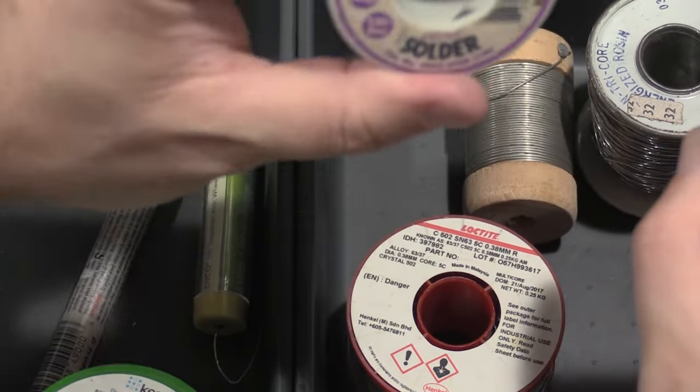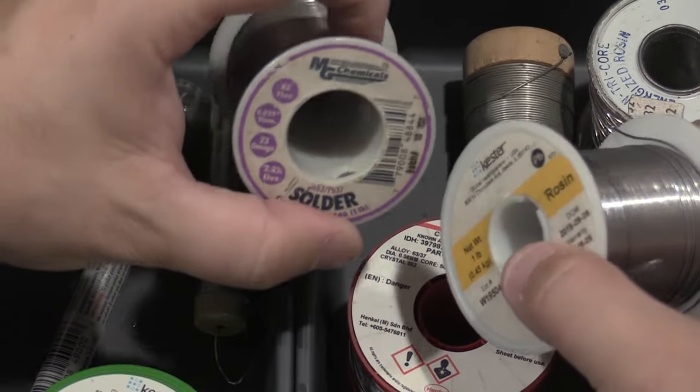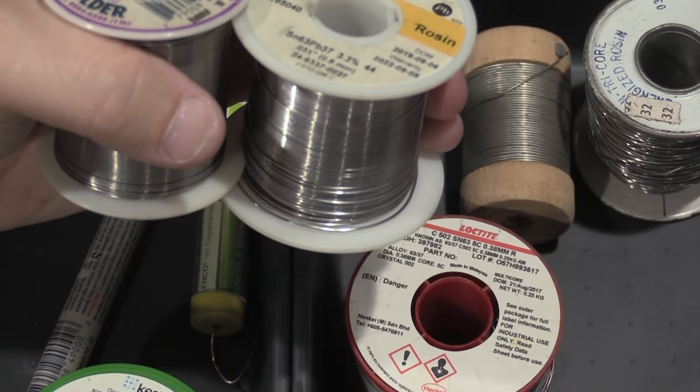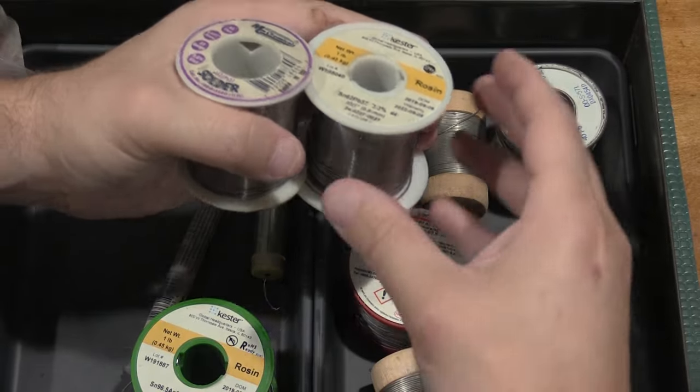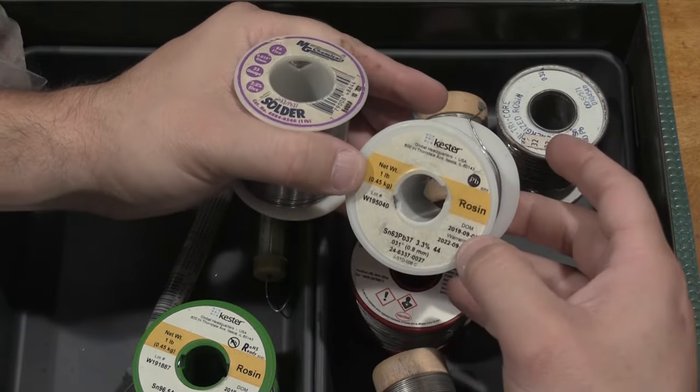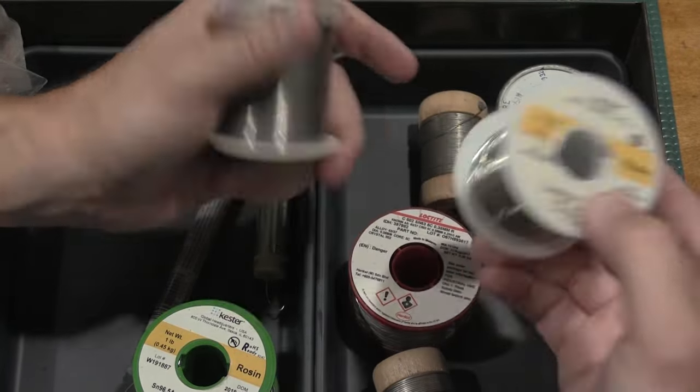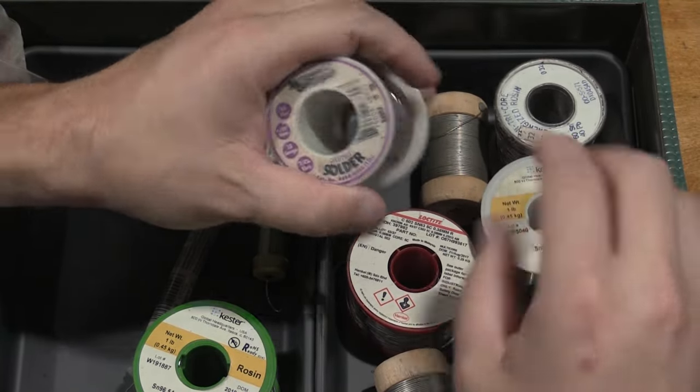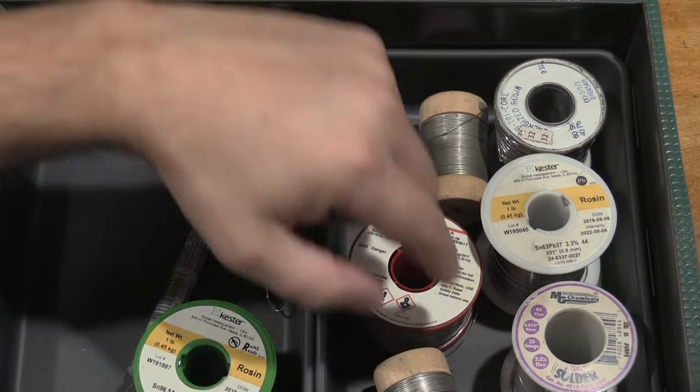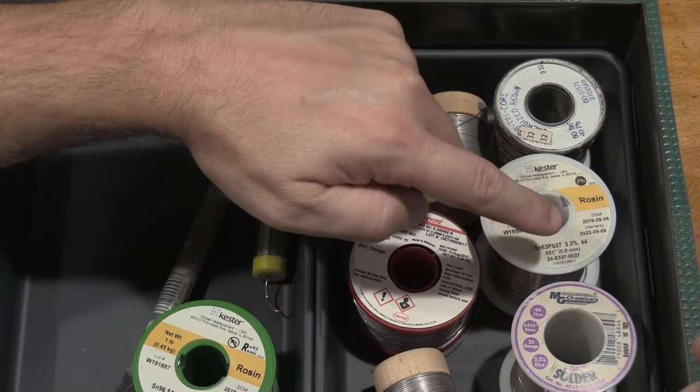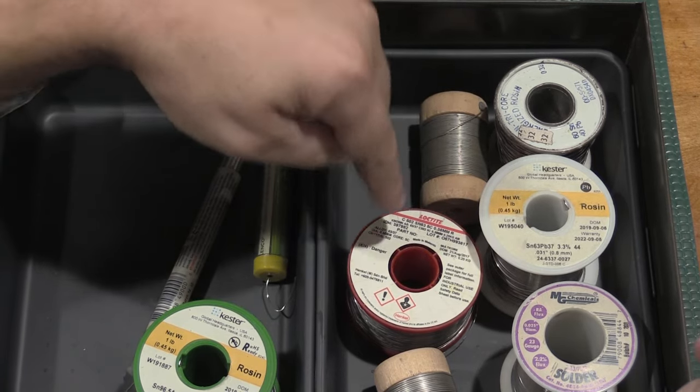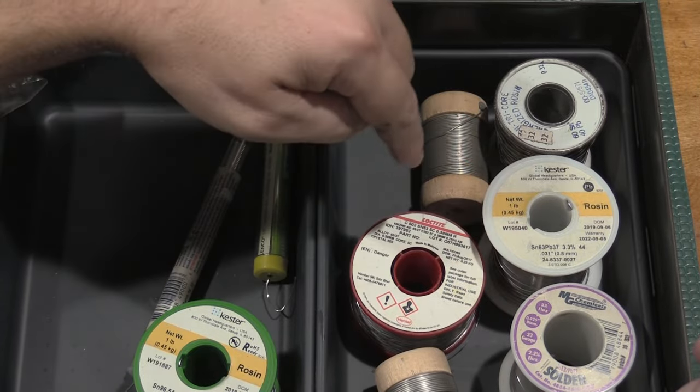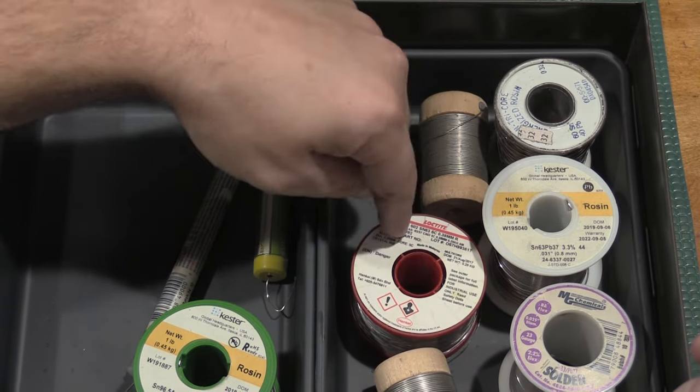This Kessler roll, which is one pound, this is 63-37, which is the preferred alloy that I use. The reason for that is it freezes better. So when you solder something, you melt the solder wire onto the components and it flows out. This is also 0.8 millimeters, so a little thicker, 0.031 inches.